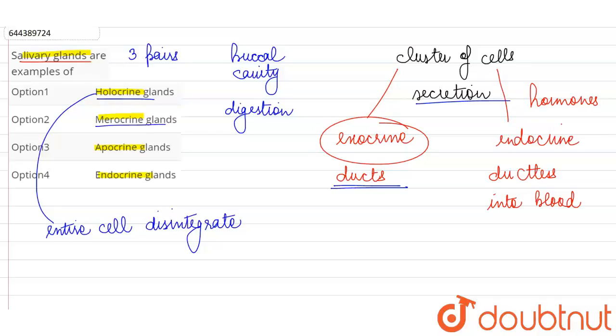Merocrine glands are those in which the cell is not disintegrating, no part of the cell is being poured with the secretion. The cell which is involved in production of the substance simply transports the secretion out of the cell body and puts it into the duct.